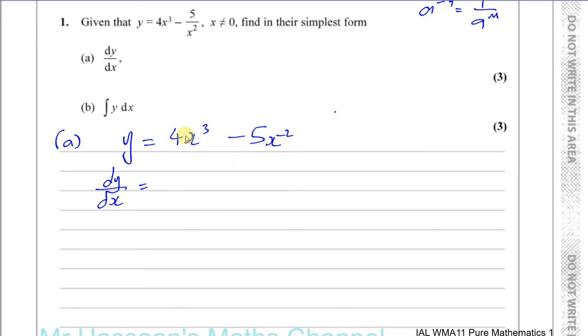So here we've got 4x cubed. When you differentiate, you multiply by the power. So you have 3 times 4, which is 12. So you have 12x, and then you take 1 from the power, so that becomes squared. And here you have minus 2 times minus 5, which is plus 10. And then you take 1 from the power, and you take 1 from minus 2, you get minus 3. And there's your answer.